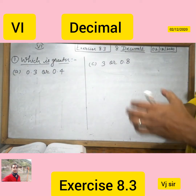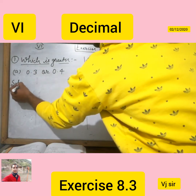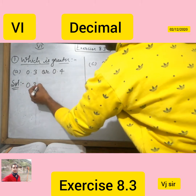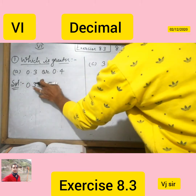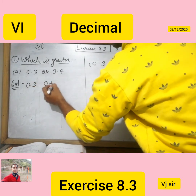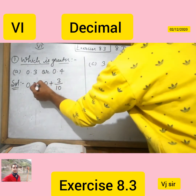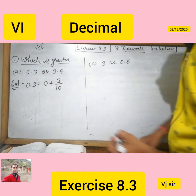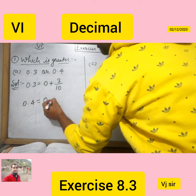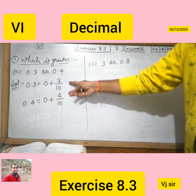If you would like to find out which one is greater, it is a very simple method. I will show you how we can represent 0.3. We can write it as 0 plus 3 upon 10. And what about the next number, 0.4? That is 0 plus 4 upon 10.